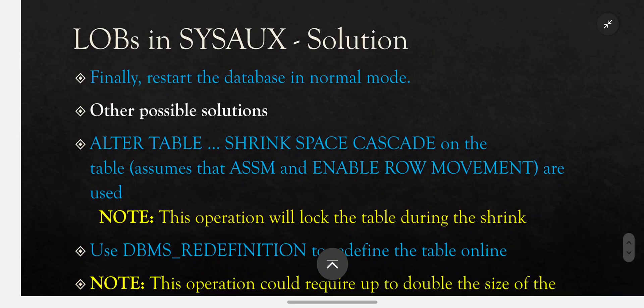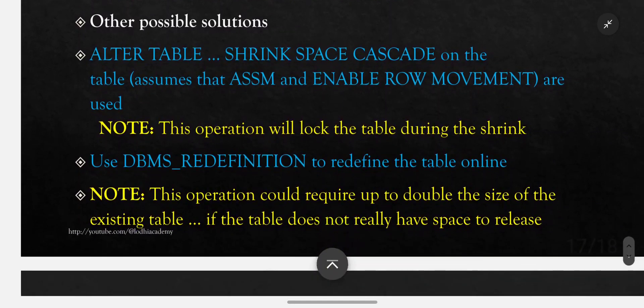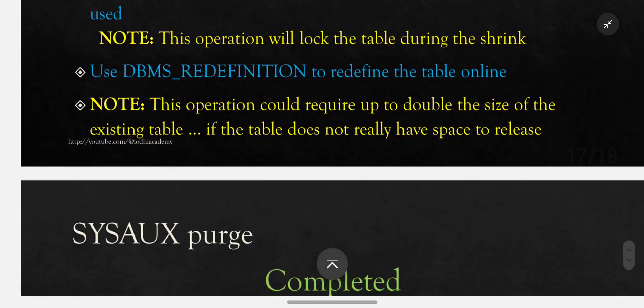Finally, restart the database in normal mode. Other possible solutions: ALTER TABLE SHRINK SPACE CASCADE on the table — note this assumes ASSM and enable row movement are used, and this operation will lock the table during the shrink. You can also use DBMS_REDEFINITION to redefine the table online, though this could require up to double the size of the existing table.